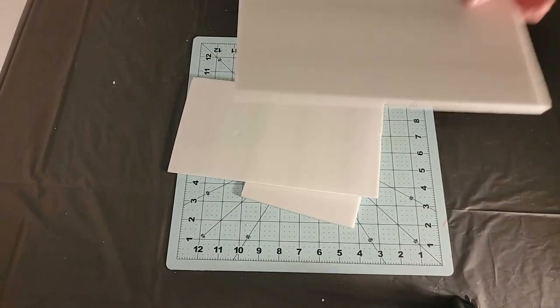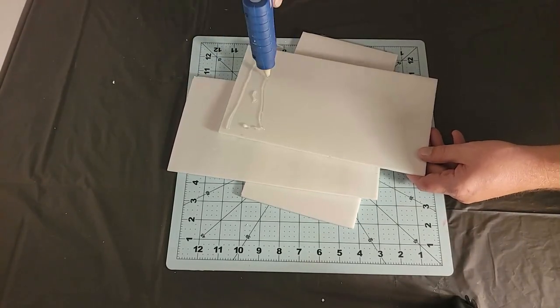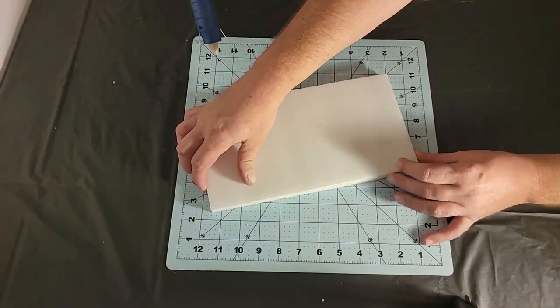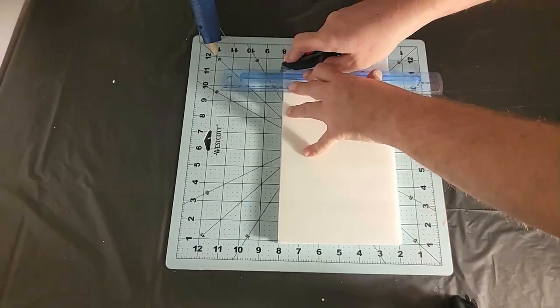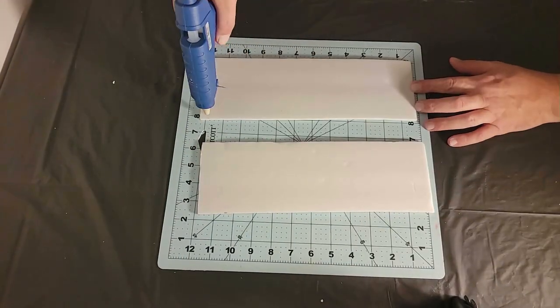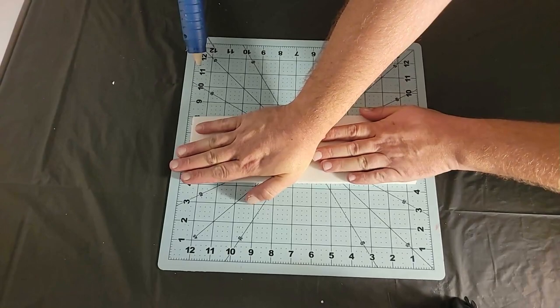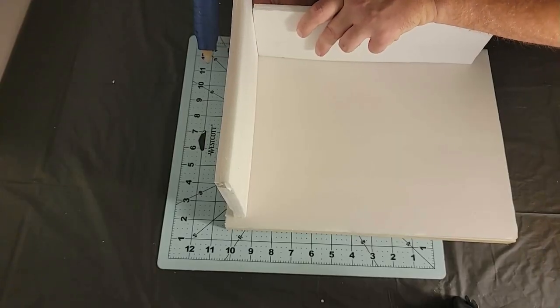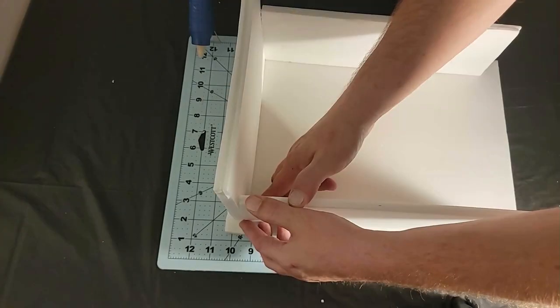Next I measured and cut three pieces to the same size and glued them together to make the wall for the back of the labyrinth. They ended up being a little longer than I wanted so I just cut them a little shorter. Then I measured some more pieces to make up the walls on the sides and the front of the labyrinth and glued those together as well. Then I glued those to the base to make a rectangular box.